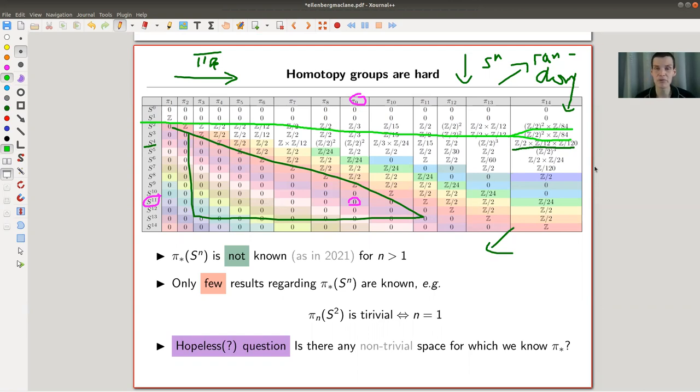I'm not saying you can't compute them up to a certain point, but there's no general formula or something like that. They were only computed up to - I haven't checked the latest results in the literature, but something around 60 or so. So π_60 of S^2 might be known, but of course at one point it just seems to get pretty hopeless. So they're really not known and there are only very very few results.